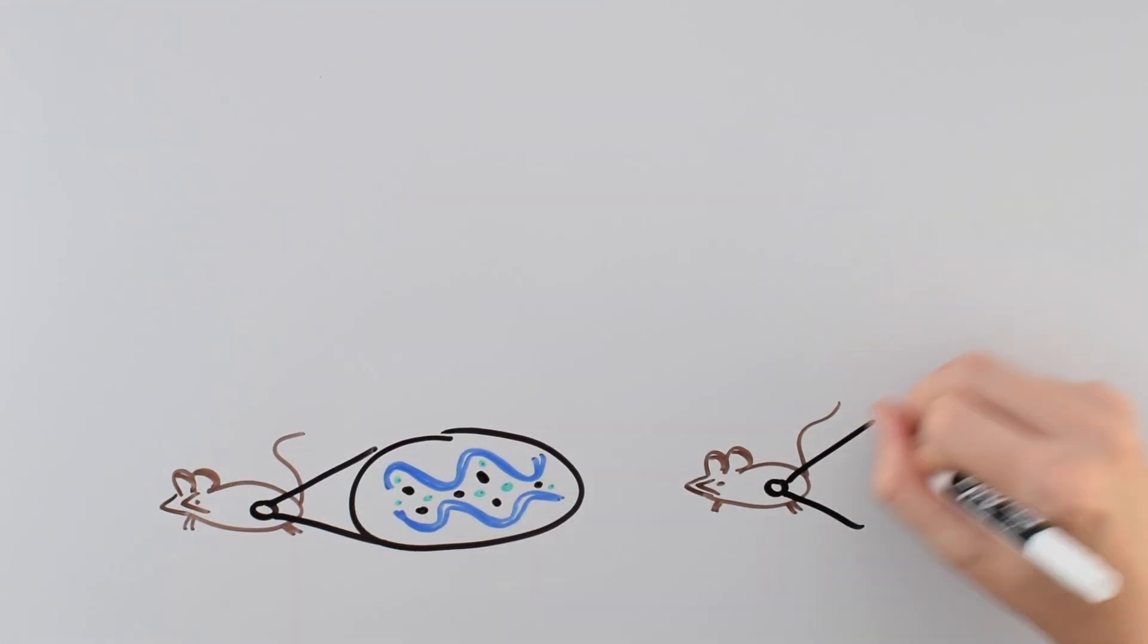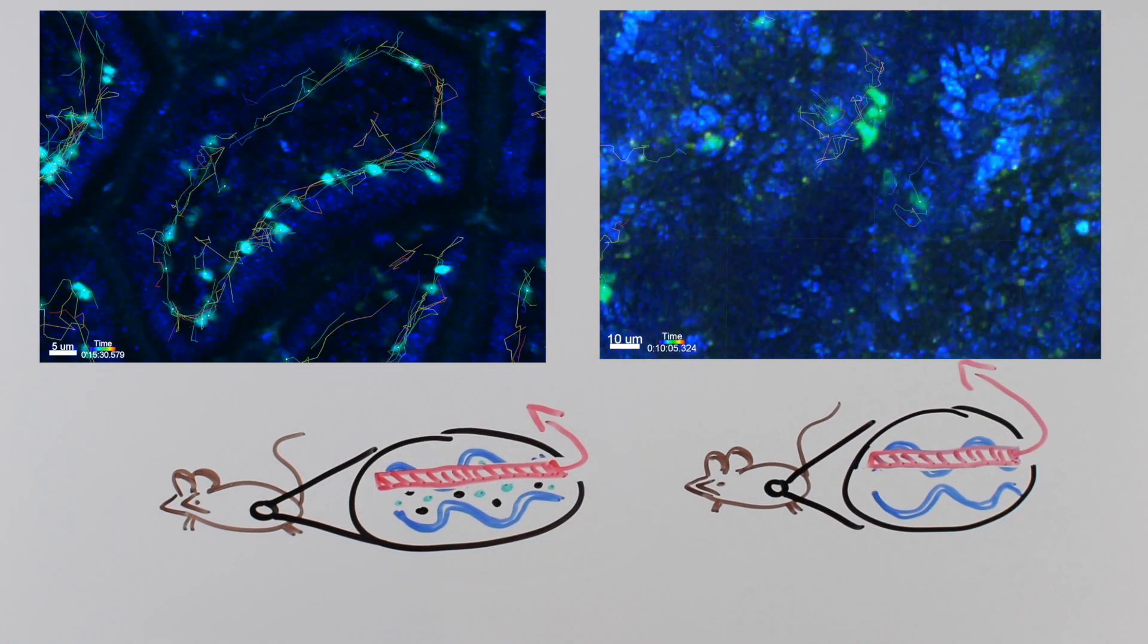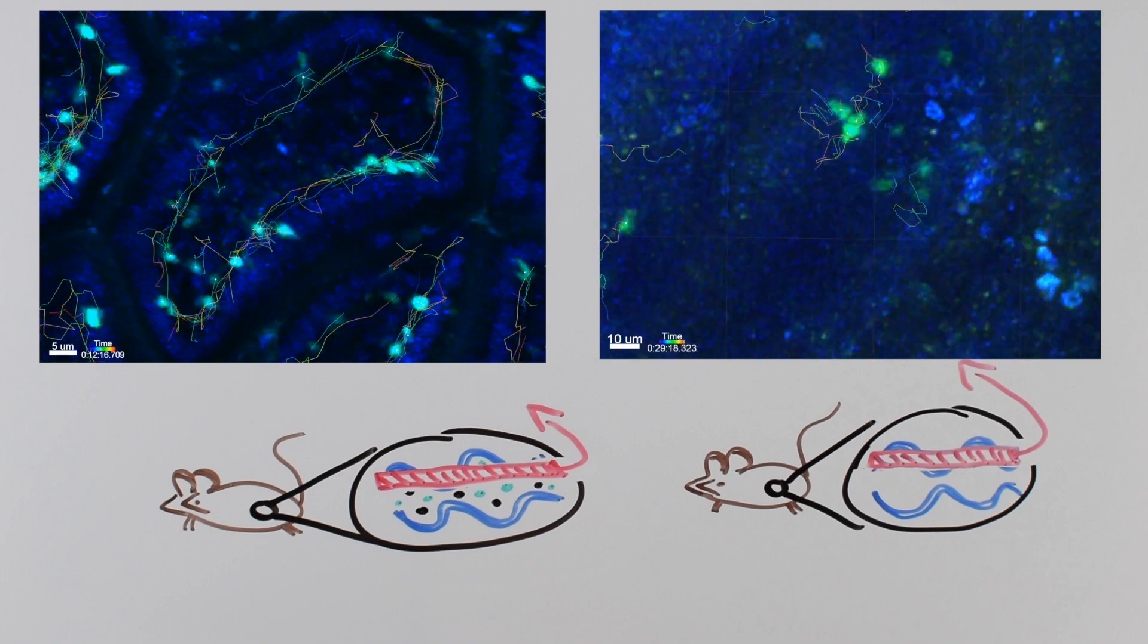To test this, they used germ-free mice that lack their own microbiome. These germ-free mice showed less efficient scanning, kind of like walking around a track versus wandering aimlessly in a little circle.